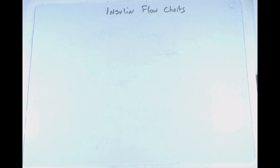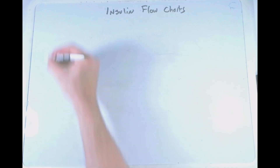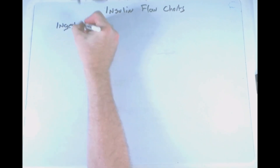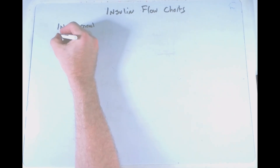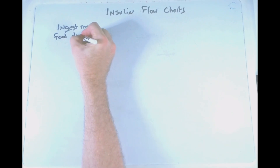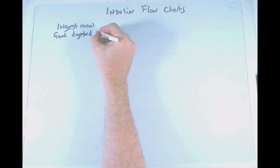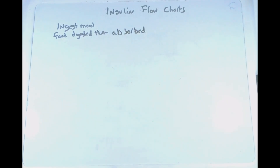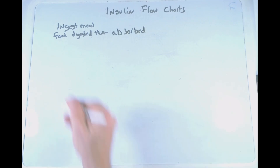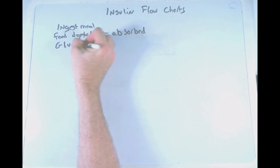To use a flowchart in the study of physiology, it's important to mark down all of the steps. In some cases, it means putting in steps that you may think are insignificant, but there are no unimportant things in the process of physiology. So we're going to start out with ingesting a meal. The food gets into the stomach where it's digested, and then it moves into the small intestine where it's absorbed.